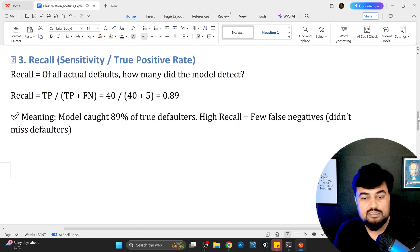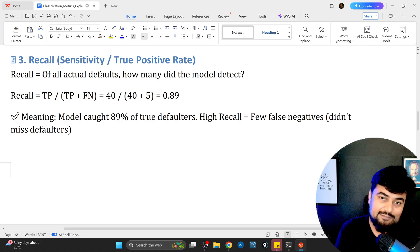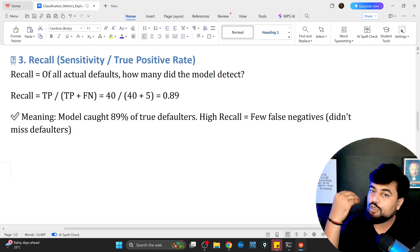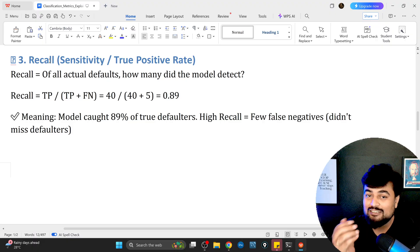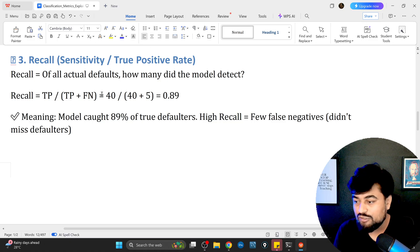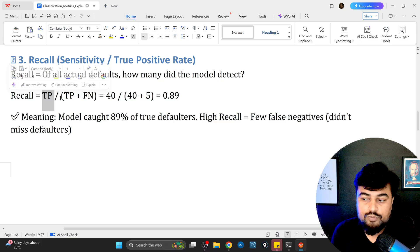Let's go to the third component: recall, also called sensitivity. What is the meaning of sensitivity? How sensitive your data is for true positive values. The formula is recall equals TP divided by TP plus FN.